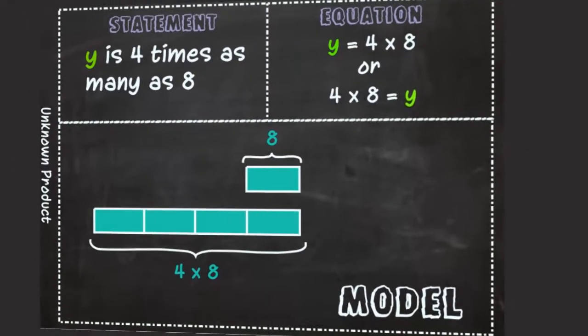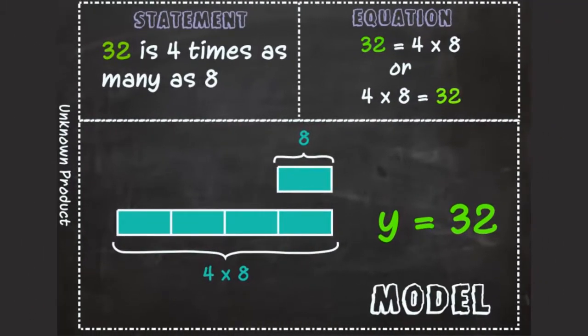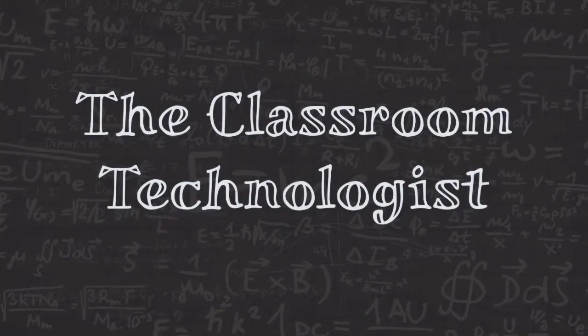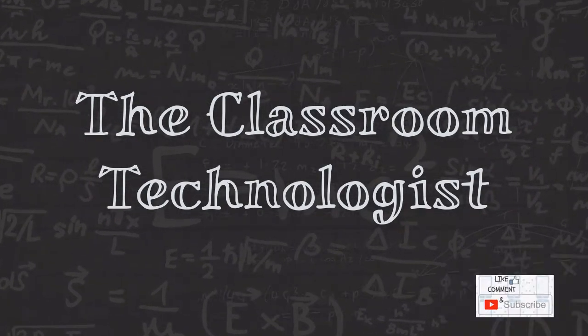4 groups of 8 equals 32, or 4 times 8 equals 32. Therefore, y equals 32.